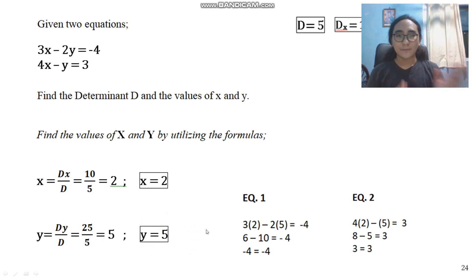So, now that we're done, but how do we know if our answers are correct? We can simply substitute x and y into our original equations. So, 3x minus 2y is equals to negative 4. 3 times 2 minus 2 times 5. Here we have this one. 6 minus 10 is negative 4. Negative 4 is equals to negative 4. Therefore, our answer is correct.